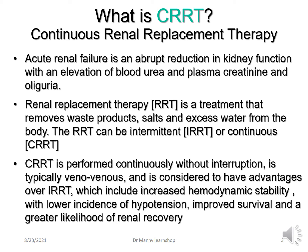Continuous renal replacement therapy is performed continuously without interruption. It's typically veno-venous, which means access is from two veins, and is considered to have advantages over intermittent renal replacement therapy, including increased hemodynamic stability. Patients don't get hypotensive as often — there's a lower incidence of hypotension. There's improved survival and a greater likelihood of renal recovery, because intermittent renal replacement therapy can be a little aggressive and can actually damage the kidney further, whereas CRRT has a tendency not to do that.